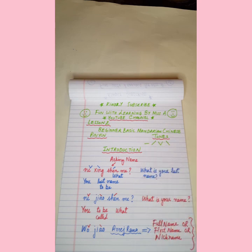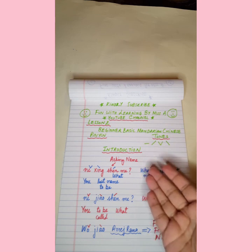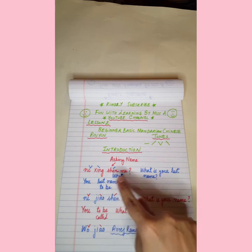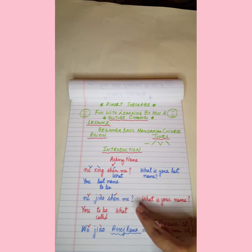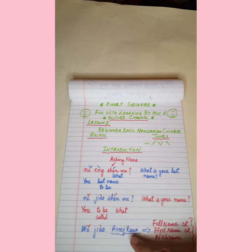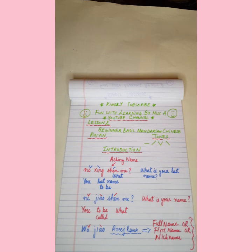Let me tell you once again: after greeting, we ask the name. Now repeat after me — 'Nǐ xìng shénme,' 'Nǐ jiào shénme,' 'Wǒ jiào Arish Rana.' Thank you so much. You can repeatedly watch this video to practice. Good luck, and do subscribe to my channel, Fun with Learning by Miss A, for more free lessons. Thank you, bye bye.